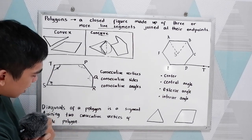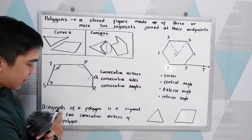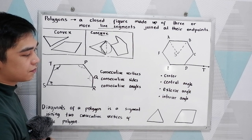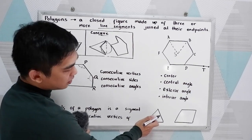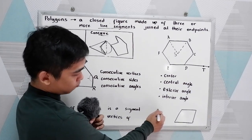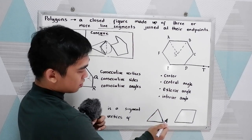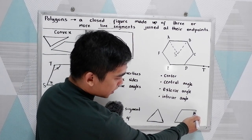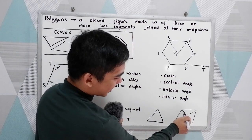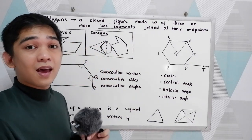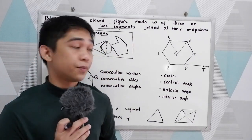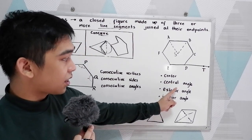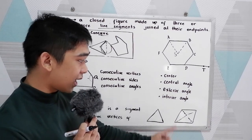You will also encounter the word diagonals. A diagonal of a polygon is a segment joining two non-consecutive vertices of the polygon. If you have a triangle, there are no diagonals because we only have three sides. For a quadrilateral, we have a first diagonal and a second diagonal. Later on, we will discuss how to get the number of diagonals in a polygon. You will also encounter the terms center, central angle, exterior angle, and interior angles.